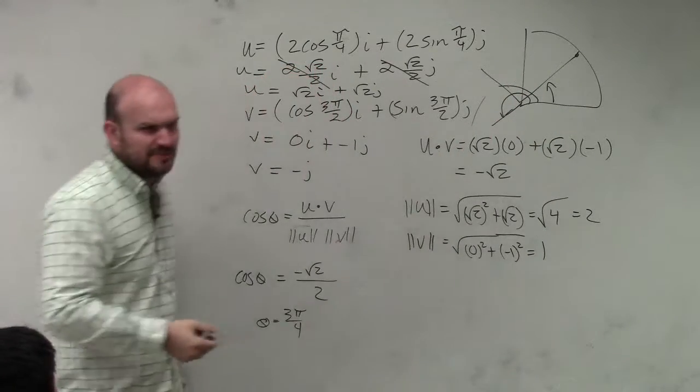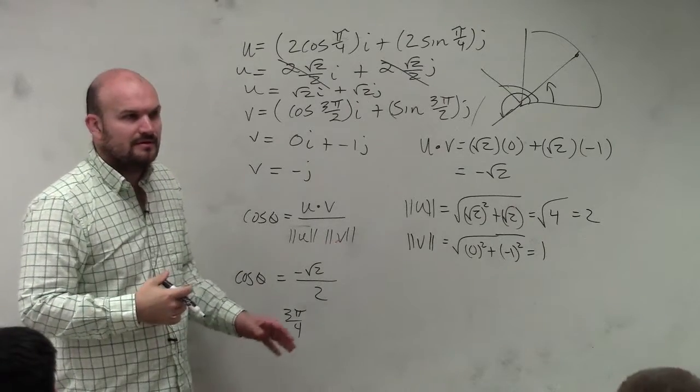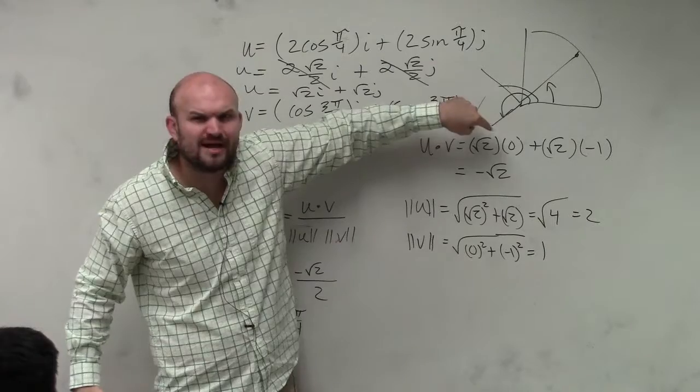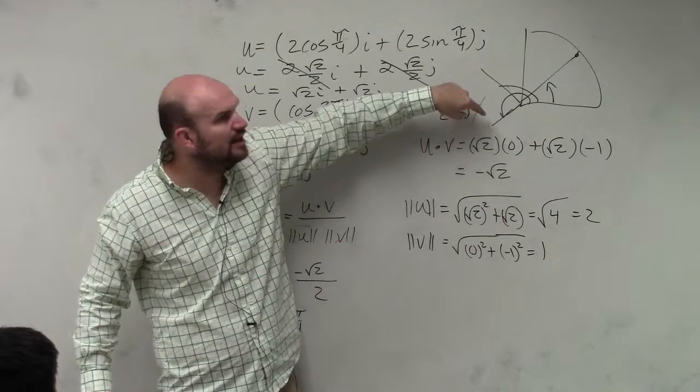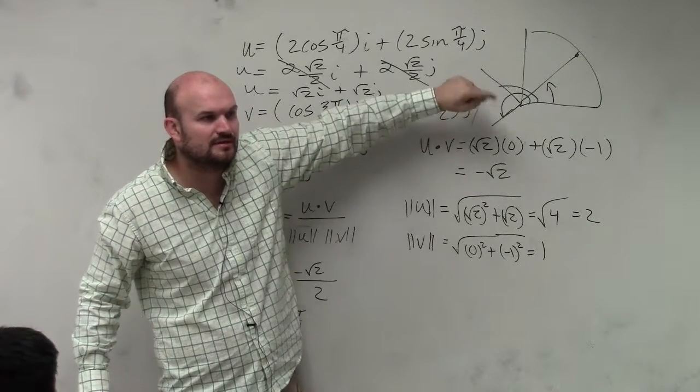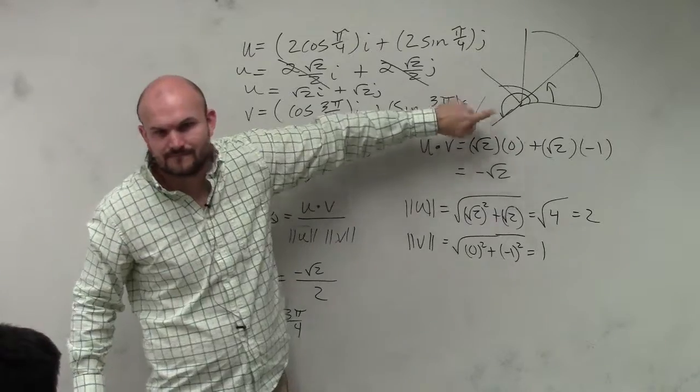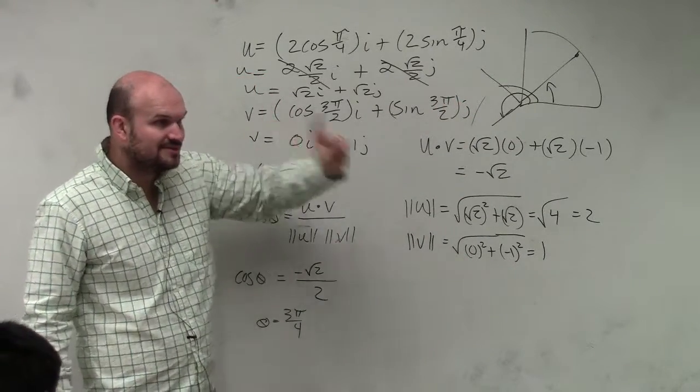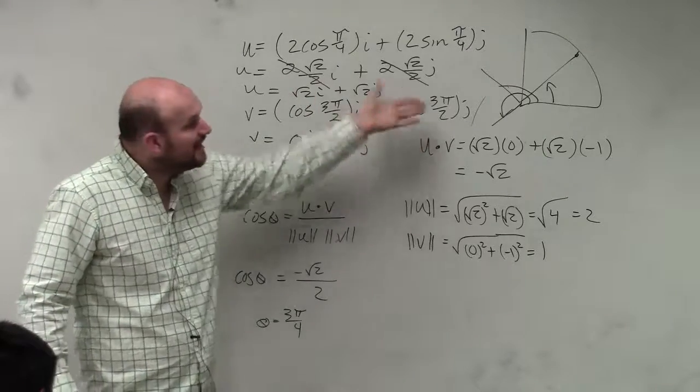Why isn't 5 pi over 4 an answer, though? Because it would be positive. No, cosine would still be negative. Cosine's negative over here. Why is 5 pi over 4 not an answer? If you plug in your calculator, you're only going to get one answer. Because what is restricted? The domain of the cosine function.